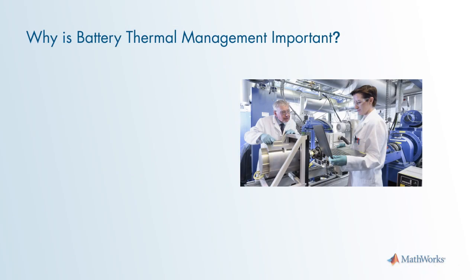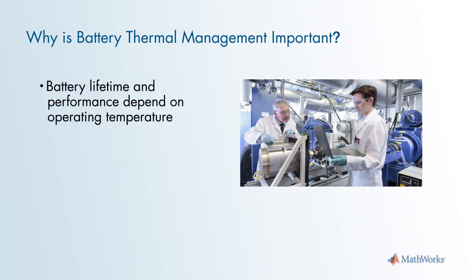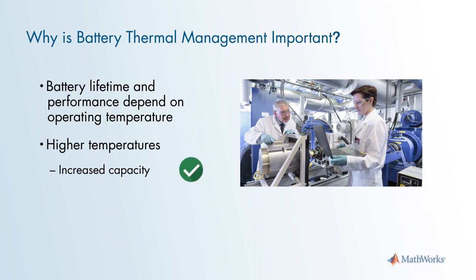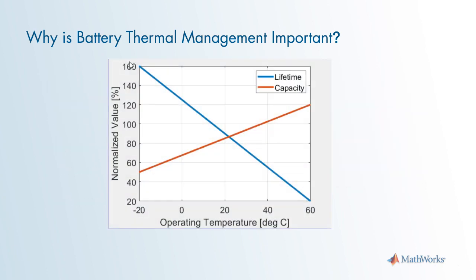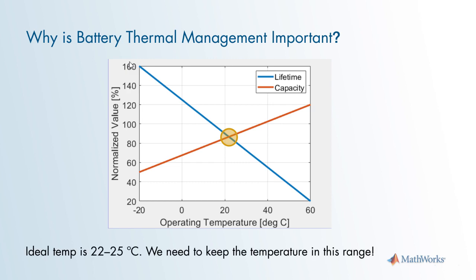We'll begin by asking: why is thermal management of a battery so important? The fundamental reason is that the battery's lifetime and performance strongly depend on operating temperature. Higher temperatures can increase the capacity of a battery — the length of time it can deliver current — but this comes at the expense of lifetime. This plot shows lifetime and capacity in normalized units as a function of temperature. Ideally we'd like to maintain temperature near the crossing of these two lines, which is around 22 to 25°C in a typical battery.